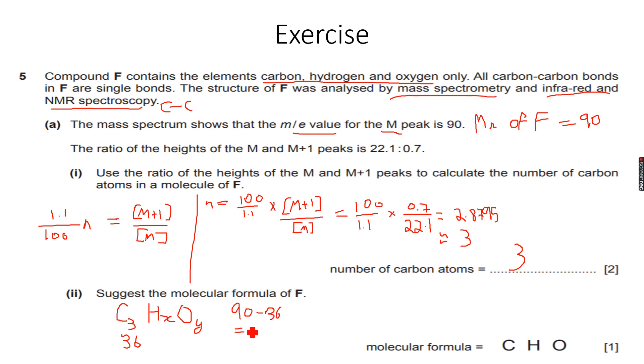90 minus 36, which is 54. That means in total we have 54 atomic mass units just from the hydrogens and the oxygen.